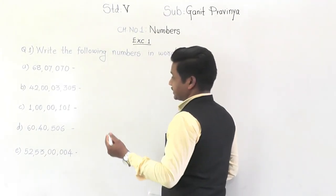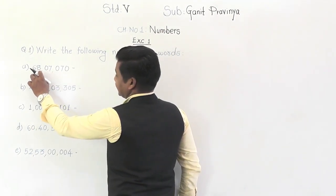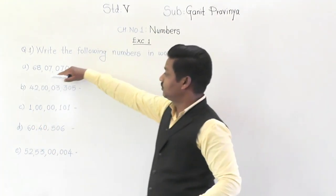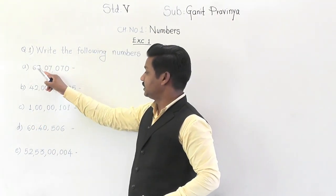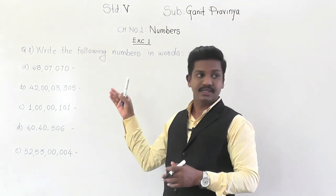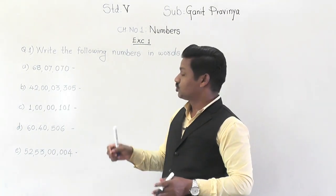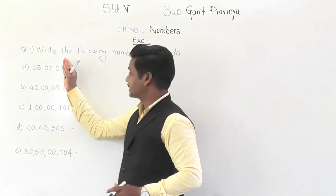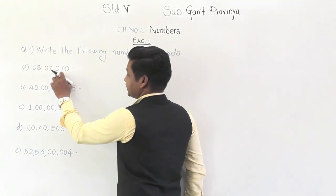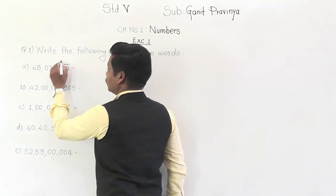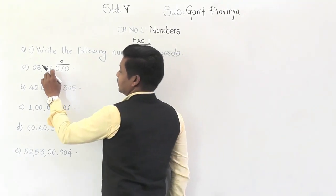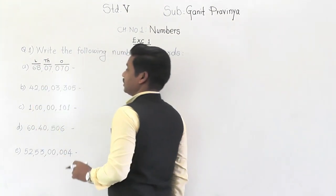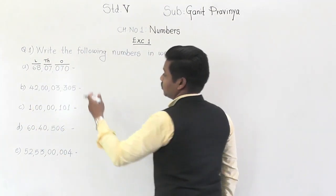Our first number is 68,07,070. Commas are already put, so it is very easy to write the number name. First, we have to identify the groups from the right side. There are three digits — this is the group of ones — then this is the group of thousands, and this is the group of lakh.